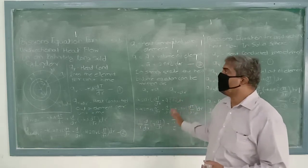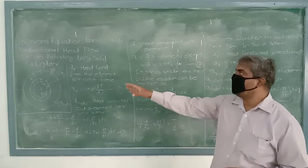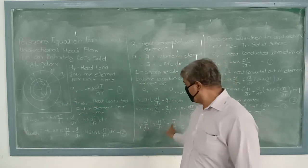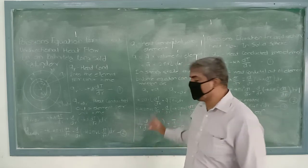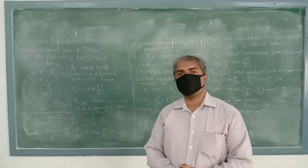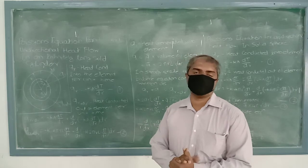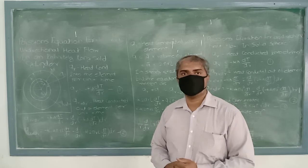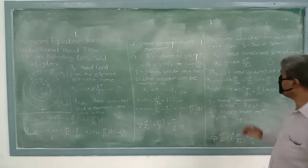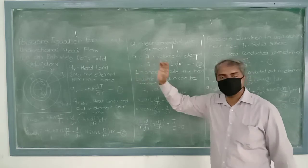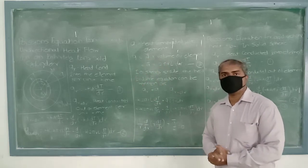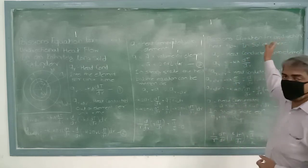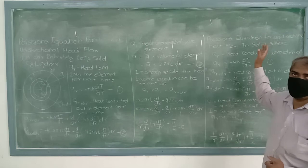This is the Poisson's equation for unidirectional heat flow in an infinitely long cylinder. This equation is very important when solving problems involving heat generation. Next, we are going to derive the same equation for a solid sphere as well.